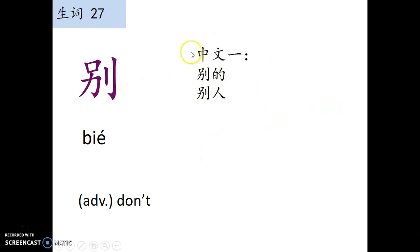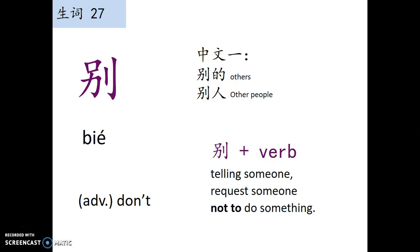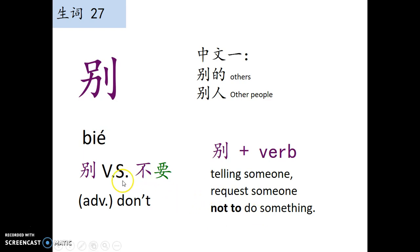别。我们在中文一的时候学别的 — others. 别人 — other people. But right here, 别 as an adverb means don't. It's like a warning or recommendation for people not to do something. So tell someone, request someone, or warn someone not to do something. Sometimes we can use 不要 to replace it.